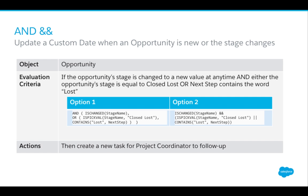Option one uses the AND grouping with parentheses. You have one big AND grouping with a nested OR grouping inside: AND(ISCHANGED(StageName), OR(ISPICKVAL(StageName, 'Closed Lost'), CONTAINS(NextStep, 'lost'))). Option two uses the double ampersand and double vertical bars — it reads more like a sentence: ISCHANGED(StageName) && (ISPICKVAL(StageName, 'Closed Lost') || CONTAINS(NextStep, 'lost')). You still need parentheses around the OR group so the system knows those go together.